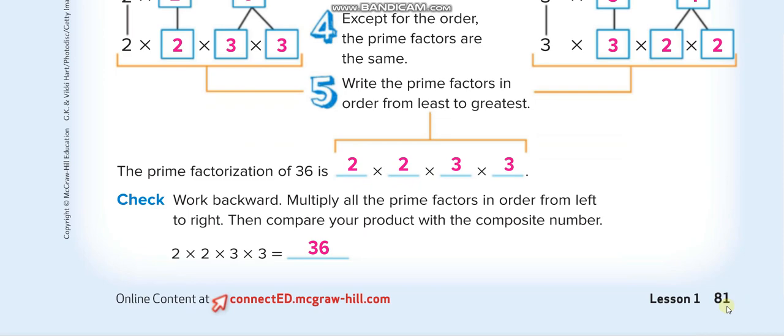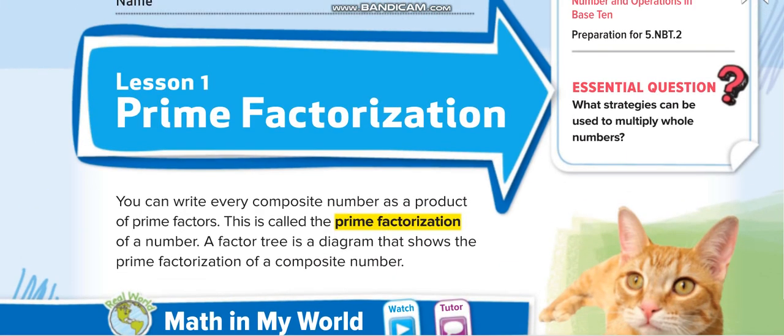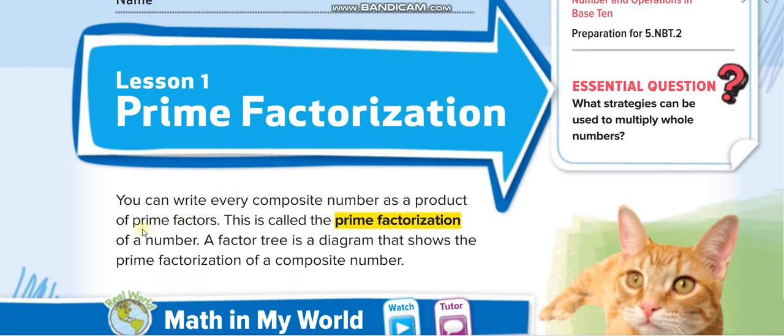To understand prime factorization, first of all you have to understand prime factors. Prime factors are those numbers which don't have factors other than one and themselves. For example, 2 is a prime factor. You cannot break it down. Like 4 is not a prime factor, you can break it down like 2 multiply 2. But this 2 you can write it as 1 times 2, that's it. You cannot break this 2 down again.